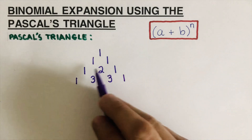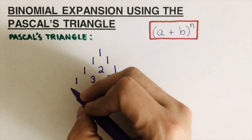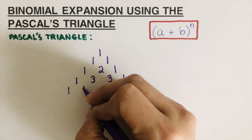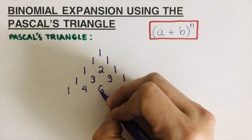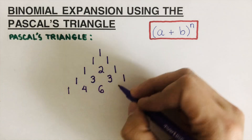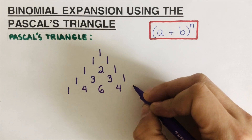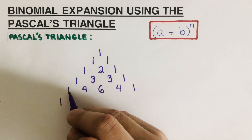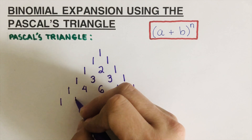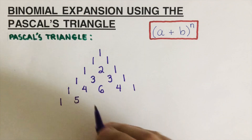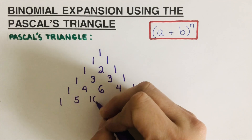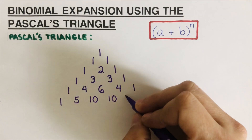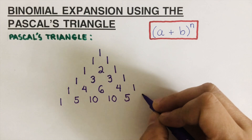We continue forming the triangle. One plus two is three, placed in the middle, and the sides stay one — giving us one, three, three, one. Then the next row: one plus three is four, three plus three is six, three plus one is four, giving us one, four, six, four, one. The next row: one, five, ten, ten, five, one.